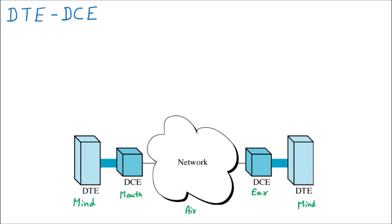The ear hears all the data which I have communicated, gives it to the mind, and the mind is going to process it. Now assume the other person is going to communicate back. Your mind is going to process a reply and you send that reply with the help of your mouth. With the help of air, that data comes to me, and my ear is going to hear what you have said, which is then given to my mind to process.